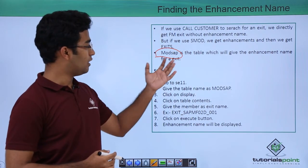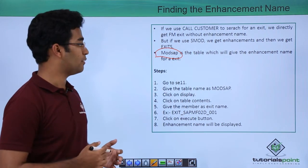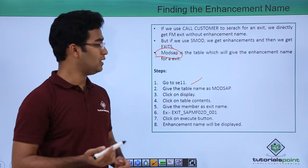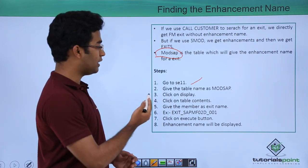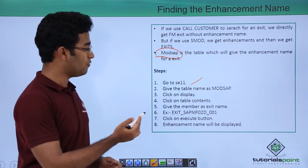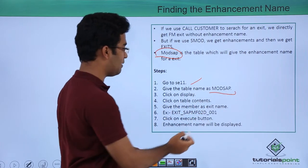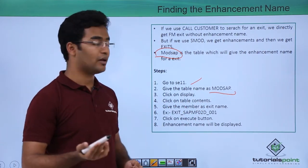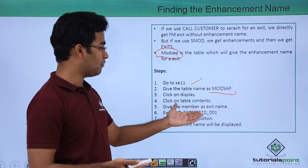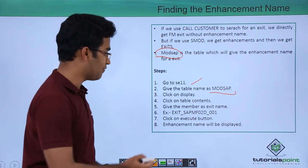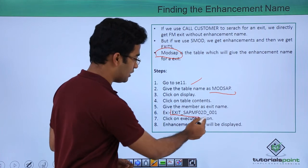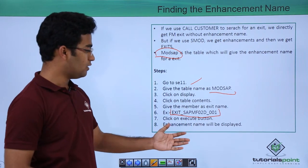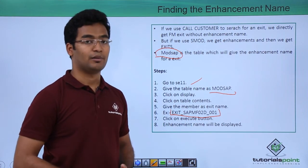Let us see how to execute the MODSAP table. Go to SE11, that is the ABAP dictionary, and in the table check radio button we have to give MODSAP and click on display. Then we have to go to table content and give the member as the exit name itself. Then clicking on the execute button will display the enhancement.